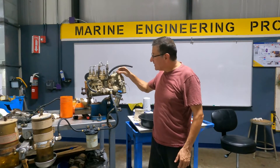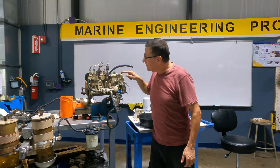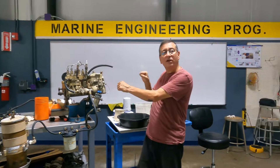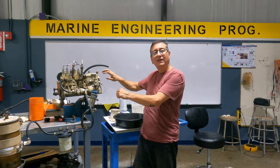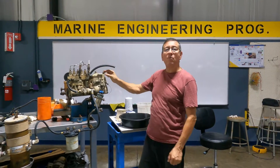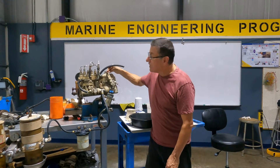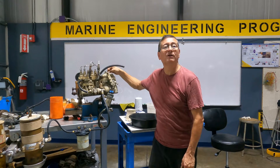Look at this. Here you have the governor — here is connected the cable with the control. More RPMs, less RPMs. This is idle and this is wide open throttle.